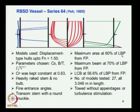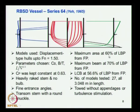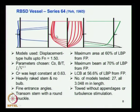It has a heavy rake stem, no bulb — only a straight stem with a fine entrance angle, and a transom stern with round knuckle. The maximum section area is at 60 percent of LBP — normally for conventional ships the maximum area is at midship (50 percent), but here the forward side is more fine and the maximum section area is pushed 10 percent after midship. Maximum beam occurs even further aft, meaning the after region is much fuller compared to the forward, which is more fine.